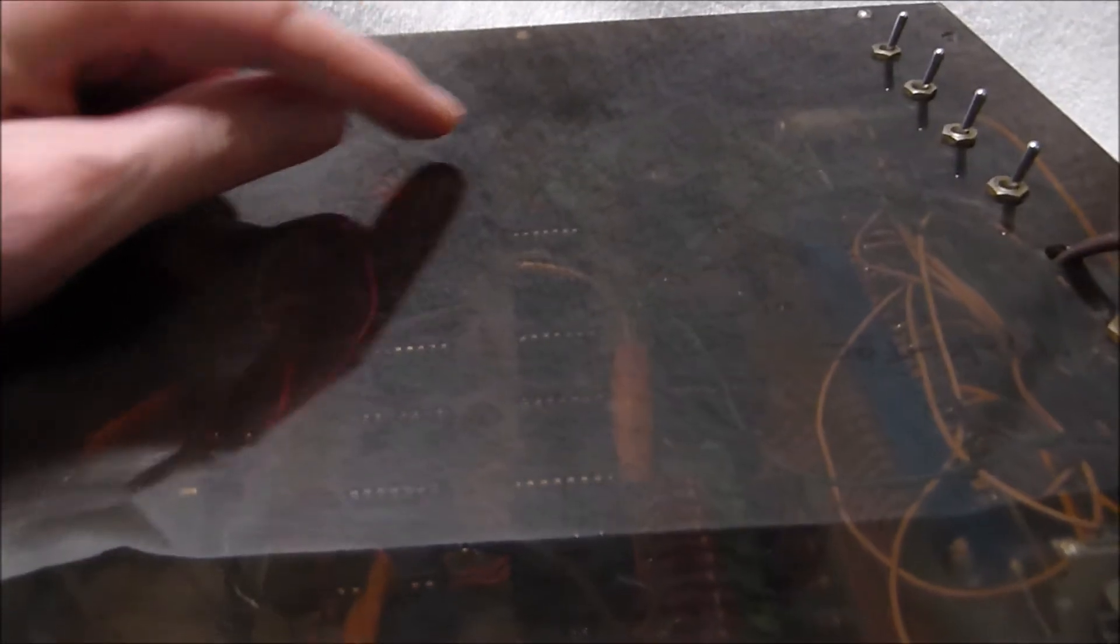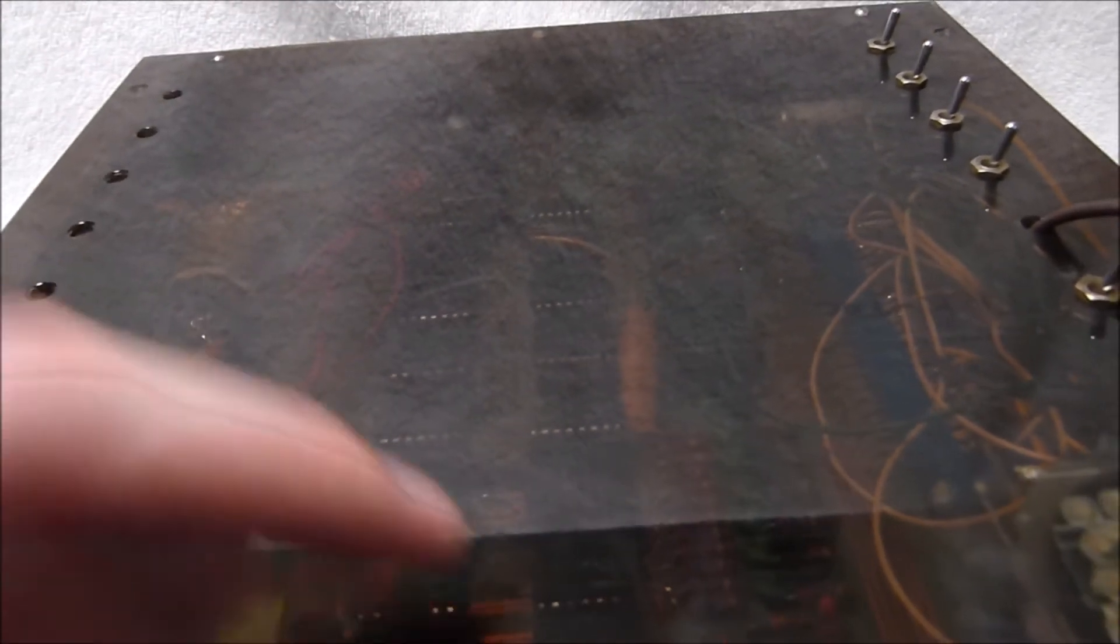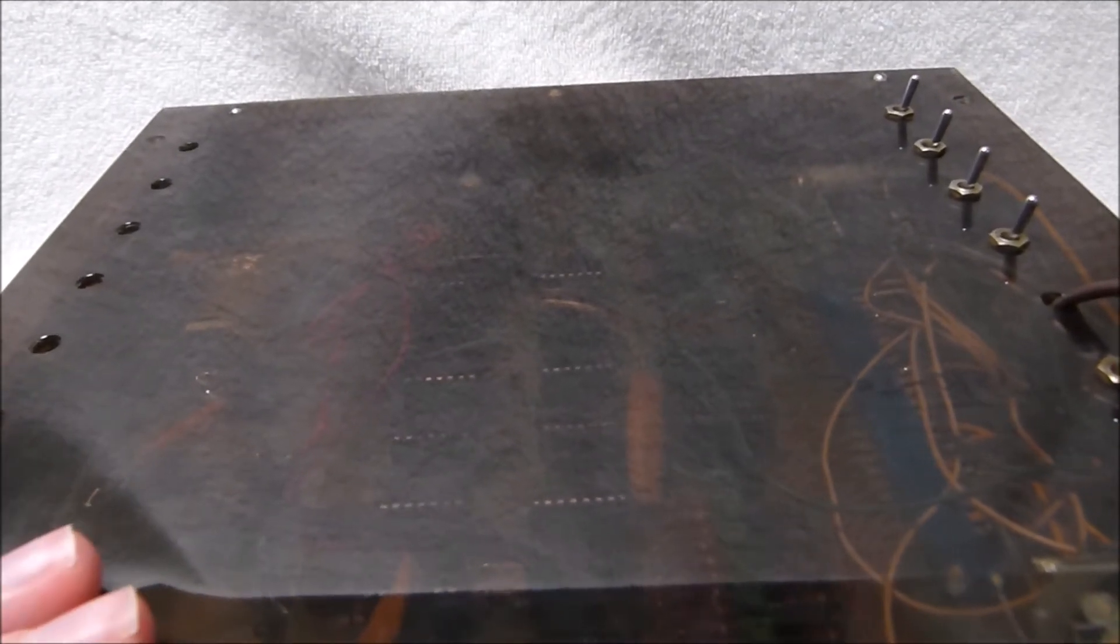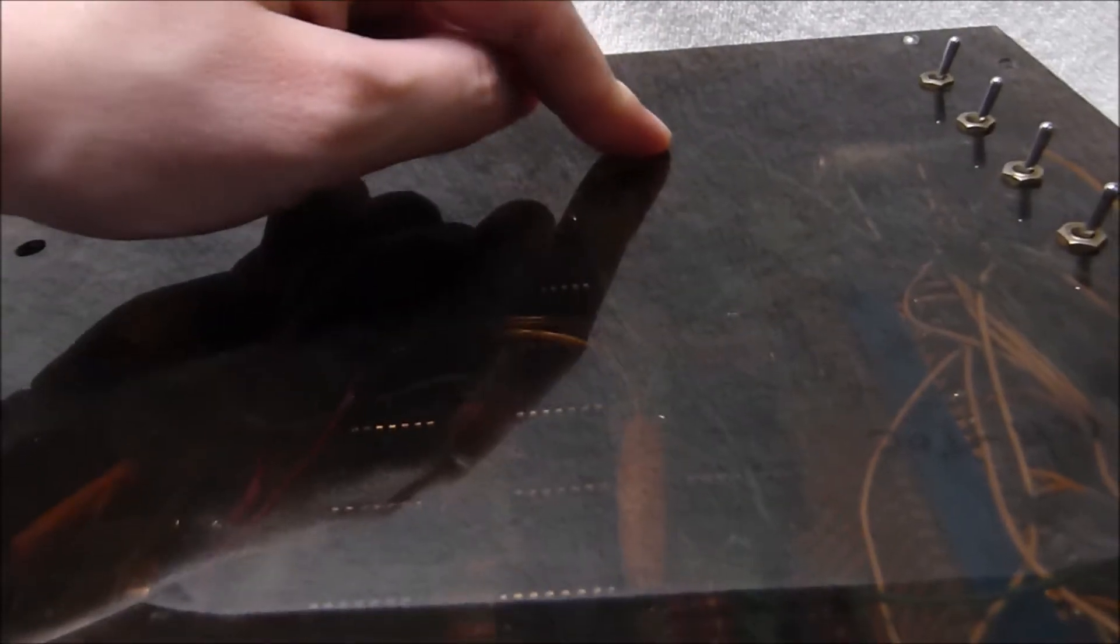Now this clock uses all 7400 series logic gates. So they draw quite a bit of power. This thing pulls about 10 watts, which is why that regulator runs hot and why the bridge rectifier also has a heat sink on it.